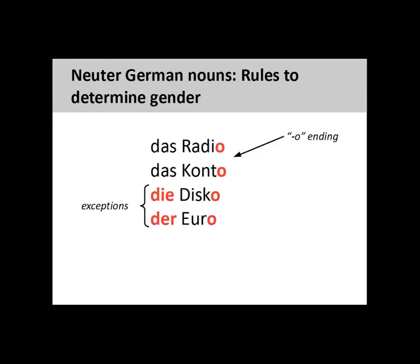Many nouns ending in -o, such as Radio meaning Radio, and Konto meaning Bank Account, will be neuter, although it is important to note that there are numerous exceptions. Disco meaning Discotheque, and Euro meaning the Euro currency, are examples of exceptions.